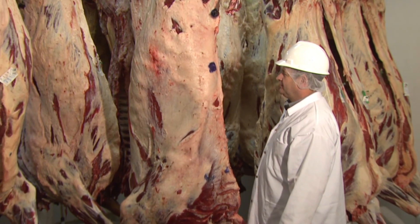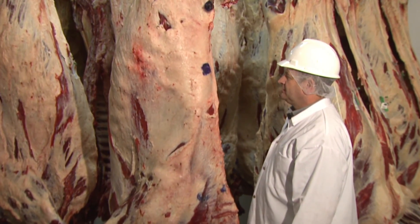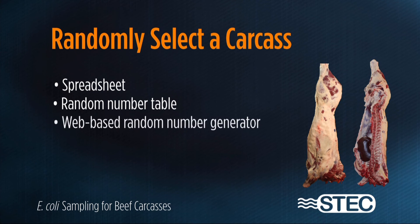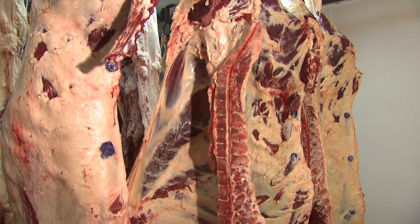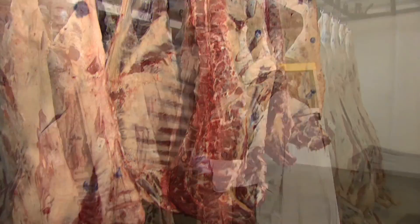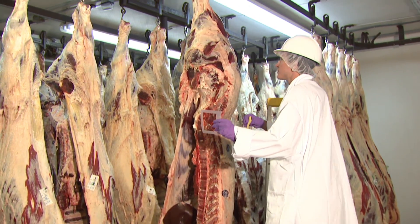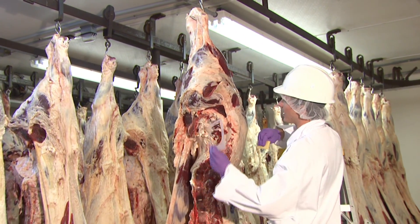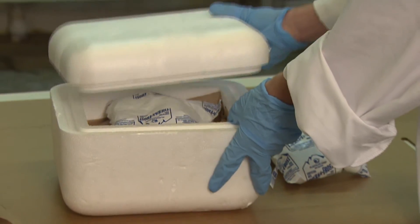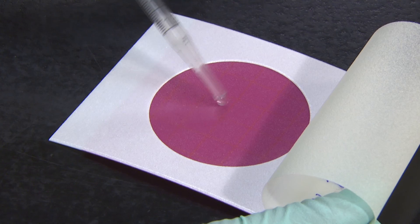Before conducting the sampling procedure, a carcass must be selected from the slaughter lot. The carcass should be randomly selected by using a random number generator such as a spreadsheet, a random number table, a web-based random number generator, or any other methods that produce random numbers. To be eligible for sampling, the carcass must have been in the cooler for 12 hours or longer after slaughter. Establishment personnel will also need to sample at a time that will allow for shipment of samples to the laboratory on the same day, with samples tested the day after.